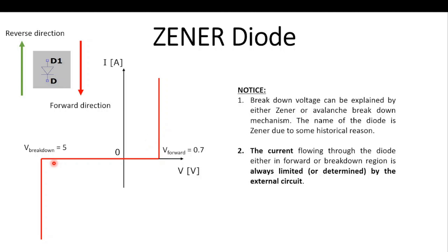The difference is that in the forward region the diode lets current flow through it — an infinitely big current in the forward direction, which is the direction of the arrow. In the breakdown region the same thing happens: the diode also lets an infinitely big current flow through it, but in the reverse direction — the opposite direction of the diode's arrow.